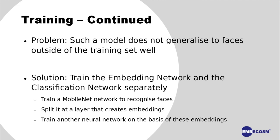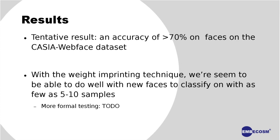To solve this, we used a technique called weight imprinting. This involved training the network as before, then splitting the neural network at the point where it generates embeddings, and training a new classifier — in our case a very small neural network — to classify based on the embeddings the first network generated. The advantage is that the first network is trained to generate general embeddings that work well, and the second network is trained to use those embeddings. Because the second network is much smaller, it's much easier to retrain on new data.